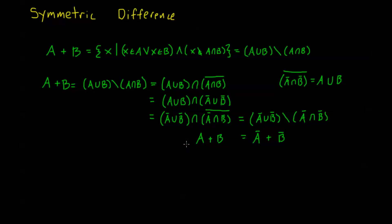We also have a couple of laws with the symmetric difference. We have a commutative law. With the definition we have, the commutative law makes sense: the symmetric difference between A and B is equal to the symmetric difference between B and A. Both of these are just all of the elements that are in either A or B but not in both, so the order of the sets doesn't matter.